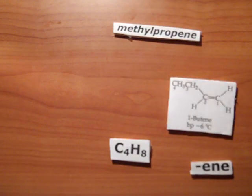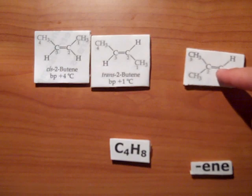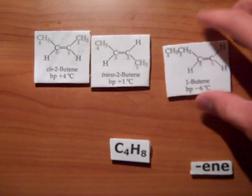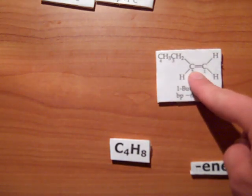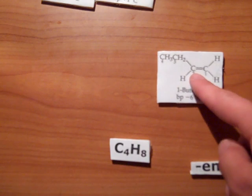The location of the double bond along the longest carbon chain is indicated by a prefix number. As in 1-butene. Right here. The chain is always numbered to give the lowest number of prefix, just as with the substituent groups.